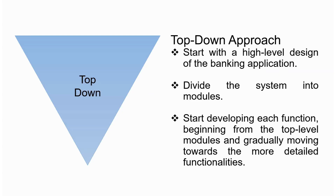For example, if we're looking into account management, then we might need to have functions related to authentication. Once we've identified all these, we start to develop each of the functions, beginning from the top-level modules and gradually moving towards the more detailed functionalities. One advantage of the top-down approach is that we have a clear vision of what we want to develop. But there are also some shortcomings — it might be less flexible compared to the bottom-up approach because we have everything set up at the very beginning.